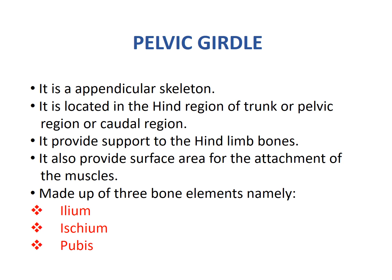Coming to the Pelvic Girdle, it is an Appendicular Skeleton. The Appendicular Skeleton is one which has skeletal elements on the transverse axis of the body. Pelvic Girdle is located in the hind region of the trunk, or pelvic region, or caudal region. It provides support to the hind limb bones like Femur, Tibia and Fibula. It also provides surface area for the attachment of muscles in that region.